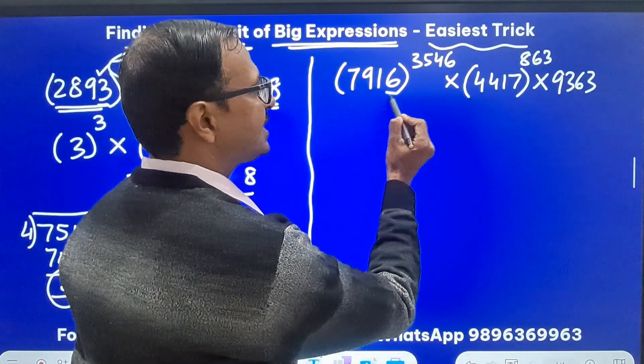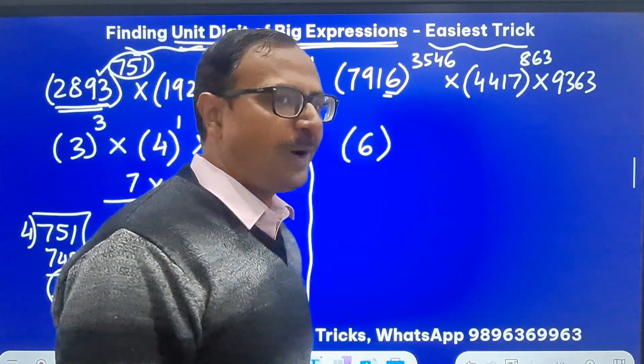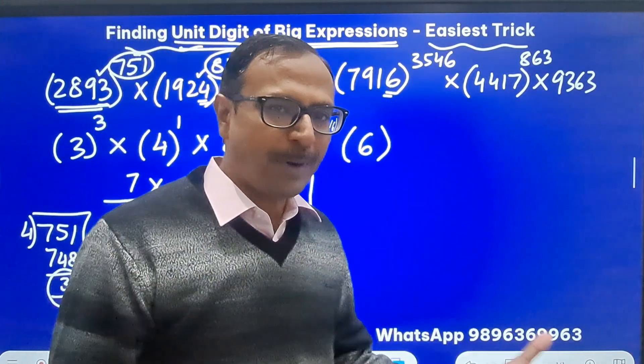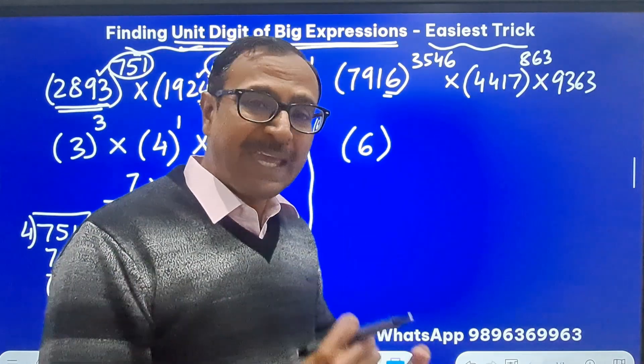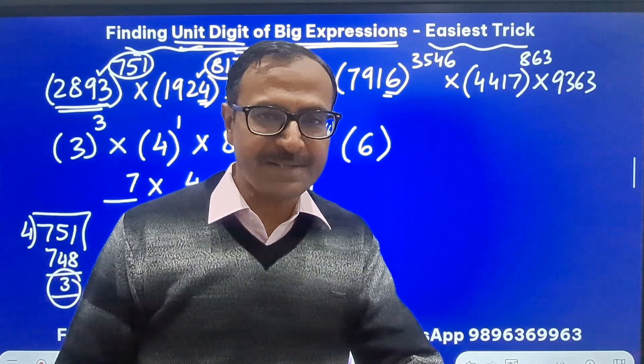Now here we have 6 as the unit digit and whenever you have 6 as the unit digit of the base the power doesn't matter because any power of 6 will always end in 6 itself.